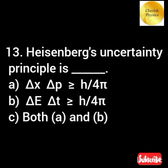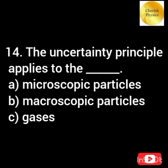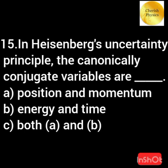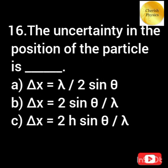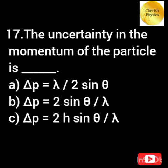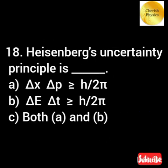Heisenberg's uncertainty principle is... The uncertainty principle applies to... In Heisenberg's uncertainty principle, the canonical conjugate variables are... The uncertainty in the position of the particle is... The uncertainty in the momentum of the particle is... Heisenberg's uncertainty principle is...